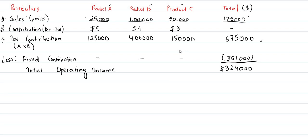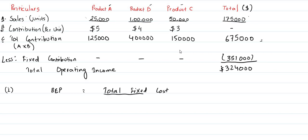For part one of the question, we are asked: if the sales mix is maintained — that is, product A at 25,000 units, product B at 100,000 units, and product C at 50,000 units — what is the breakeven point in units? To find the breakeven point, we need two components. The formula is: breakeven point = total fixed cost divided by total contribution.